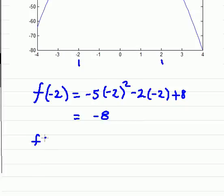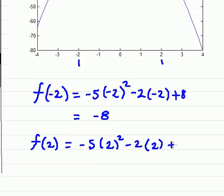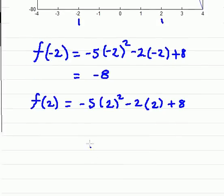Now we're going to evaluate the other end, and that's at f of 2. So negative 5 times 2 squared minus 2 times 2 plus 8. And we work through all that, and we should get negative 16.